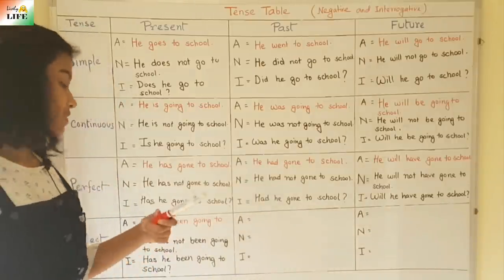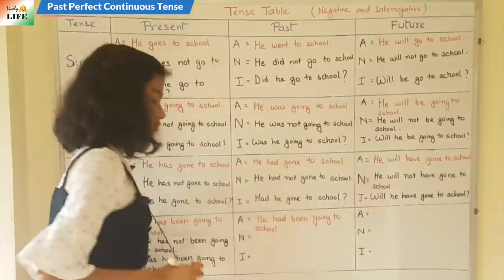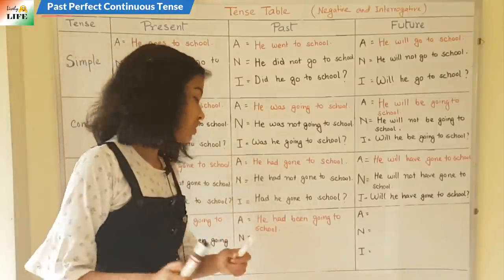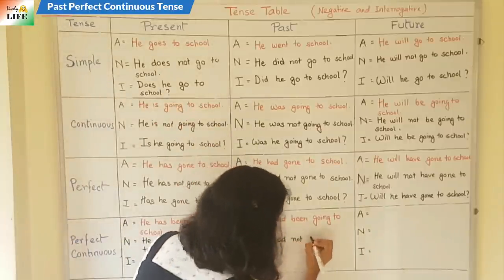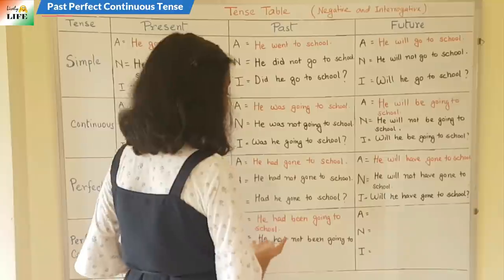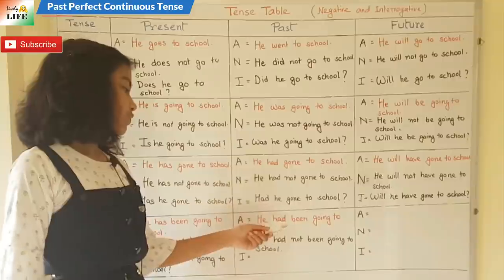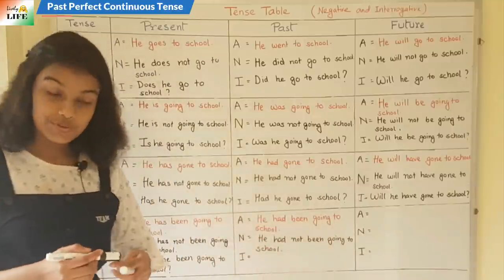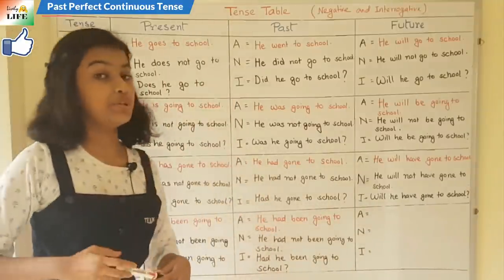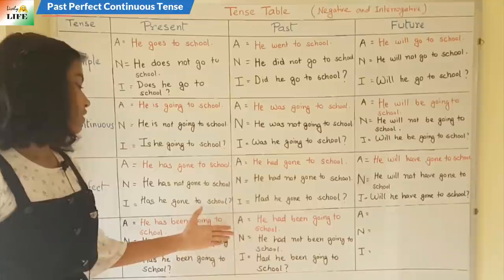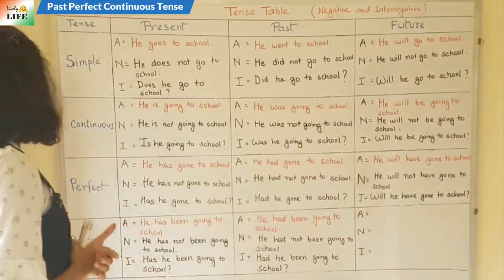Next is past perfect continuous tense. The affirmative form is: 'He had been going to school.' For the negative, write 'not' after 'had': 'He had not been going to school.' For the interrogative, interchange the first two words: 'Had he been going to school?' The three forms: affirmative — 'He had been going to school'; negative — 'He had not been going to school'; interrogative — 'Had he been going to school?'